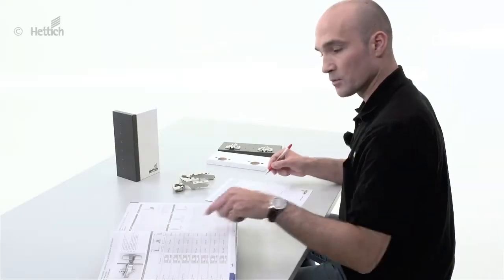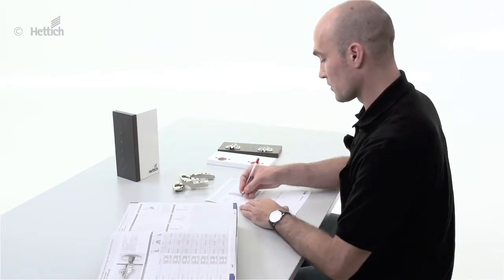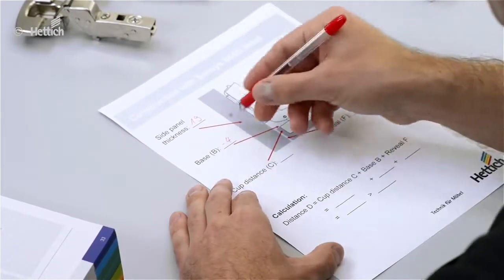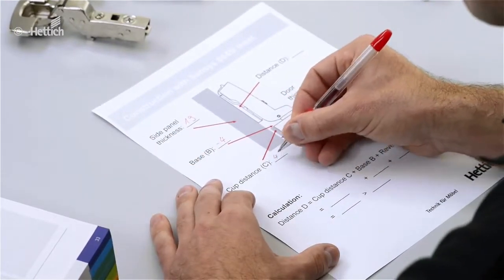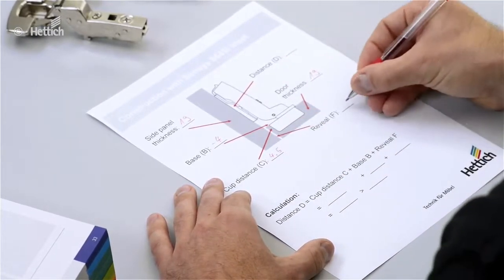We have the base B with a value of minus 4mm as you can see in the catalog. The cup distance C, we say it's 4.5mm in this example, and the reveal is 2mm.